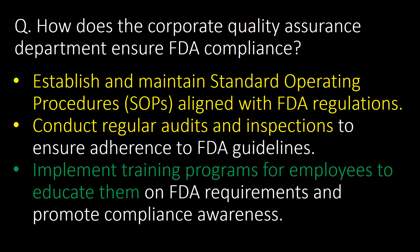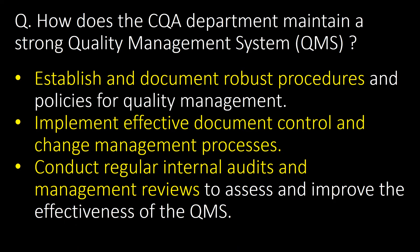How does the Corporate Quality Assurance department ensure FDA compliance? There are three ways: first, by establishing and maintaining Standard Operating Procedures (SOPs) aligned with FDA regulations; secondly, by conducting regular audits and inspections to ensure adherence to FDA guidelines; and third, by implementing training programs to educate employees.